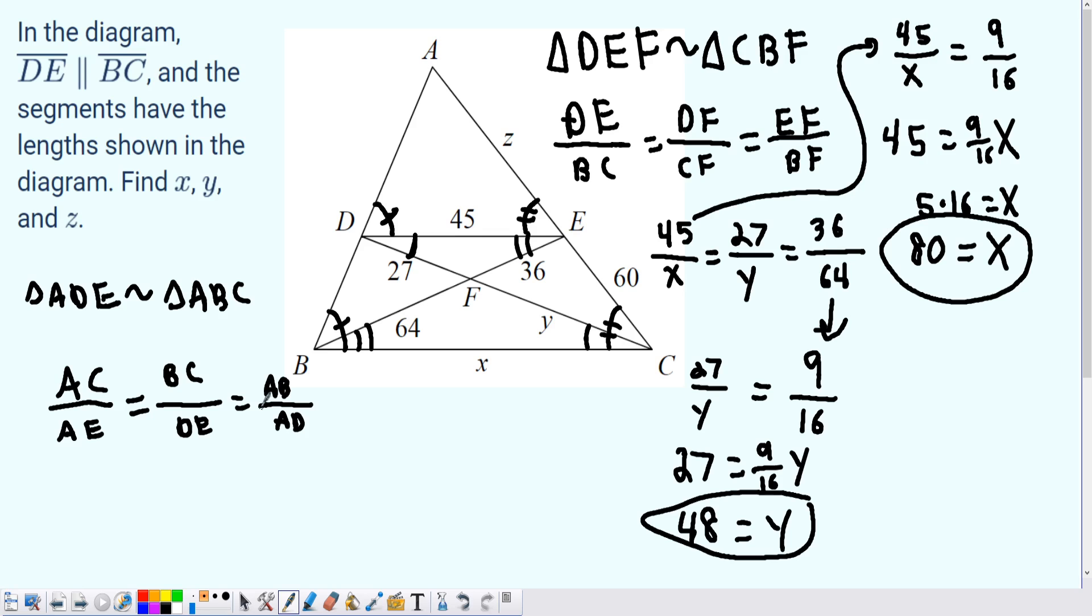AB over AD isn't going to help us since we don't know the measures of AB over AD. But we do know that BC is the same value as x, which is 80, and DE is 45. That, hence, is equal to AC. Now AC is the length of z plus 60, and that is all over the length of AE, which is just z. And now we can actually use this to solve for z.